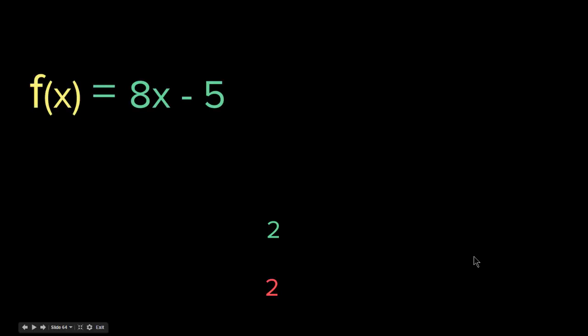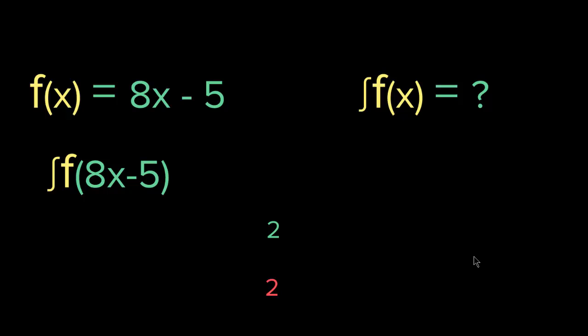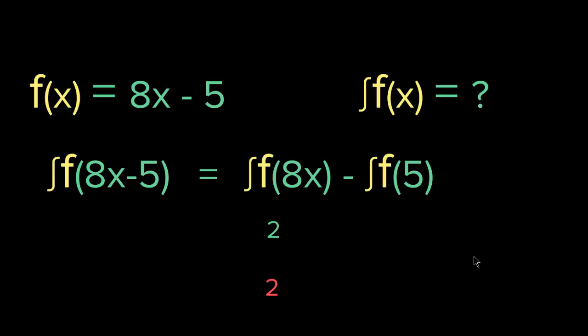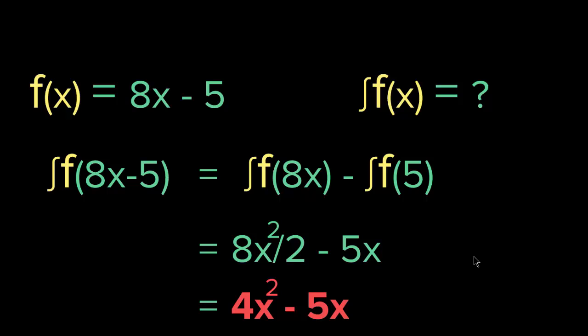Let's say we have the example 8x - 5. What is the integral of this? The integral of 8x - 5 is the integral of 8x minus the integral of 5. We know that the integral of 8x is 8x squared over 2, and the integral of 5 is 5x. So it is 8x squared over 2 minus 5x, which equals 4x squared minus 5x, because the 8 divided by 2 becomes 4.